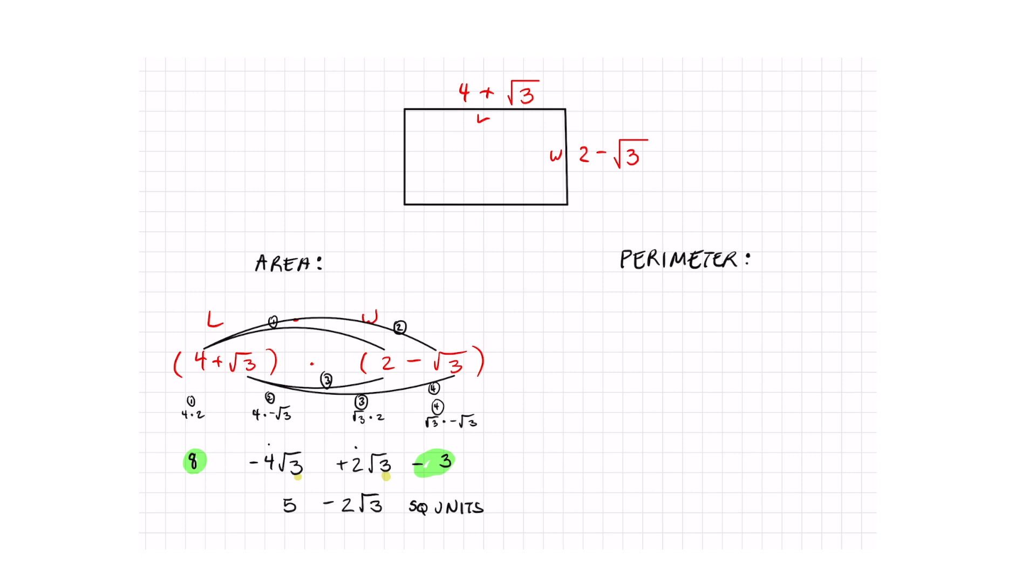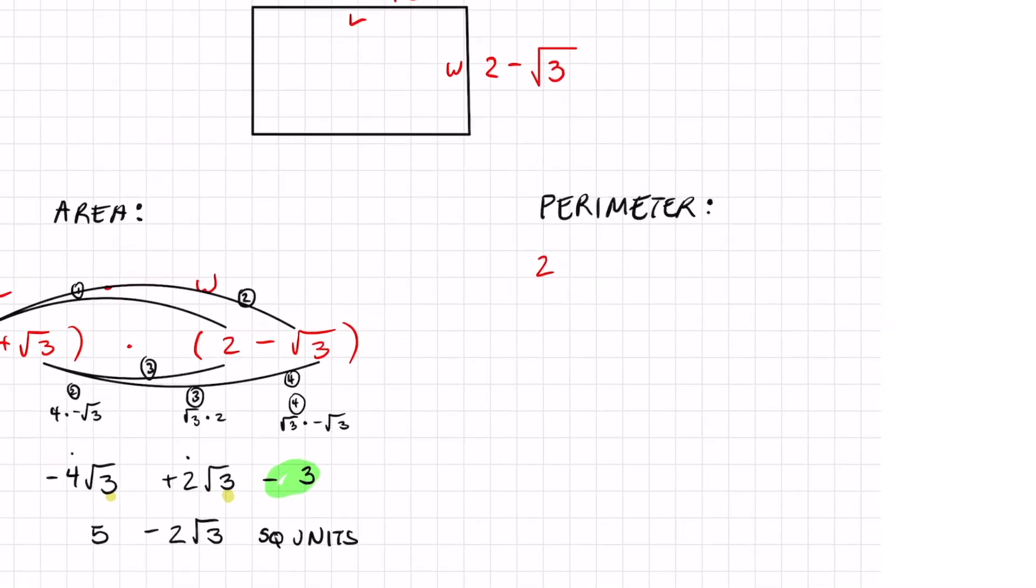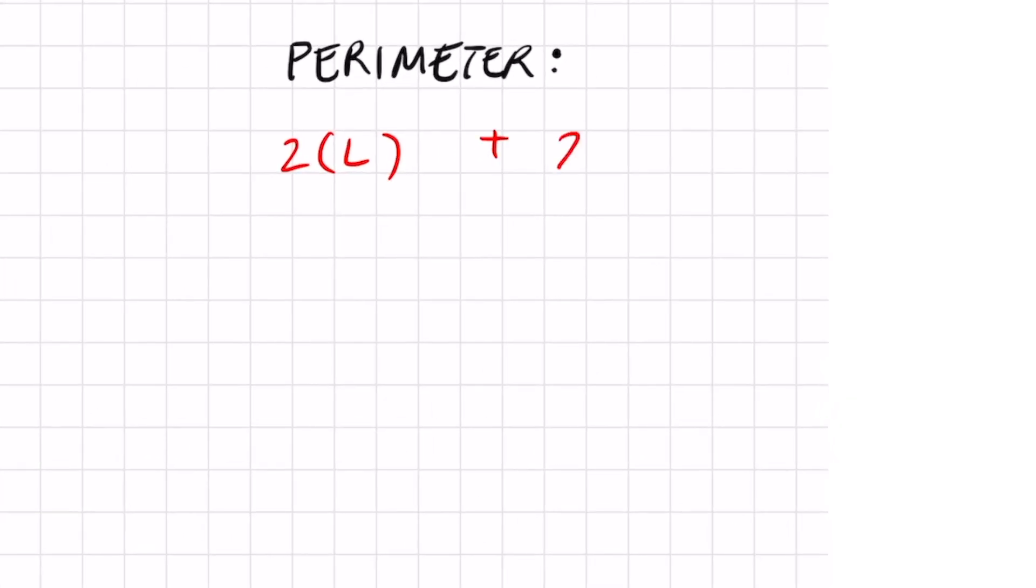Moving on to perimeter. To find the perimeter of a rectangle it's just twice the length plus twice the width. Let's substitute our dimensions in. We end up getting 2 times (4 plus square root of 3) and I'm going to add that to 2 times (2 minus square root of 3). And from here I just have to distribute once again.